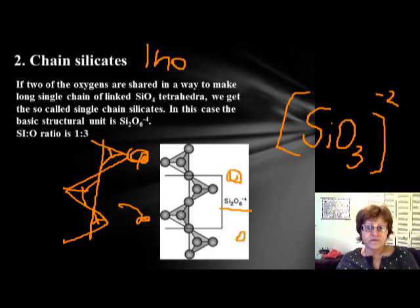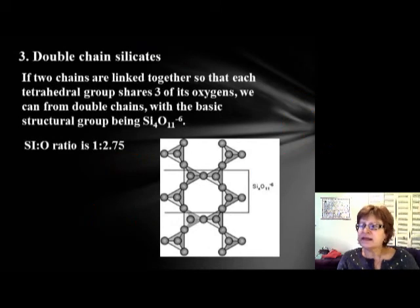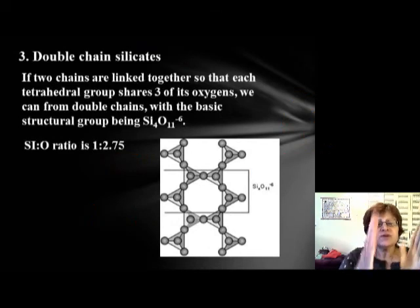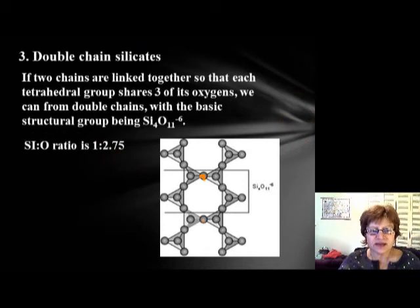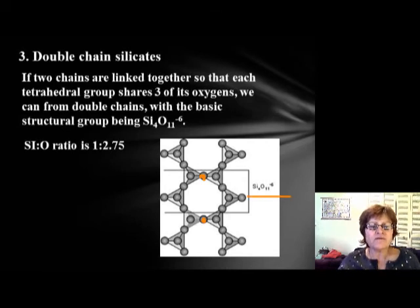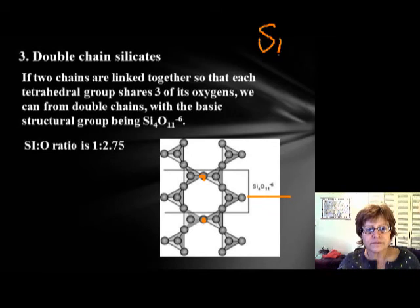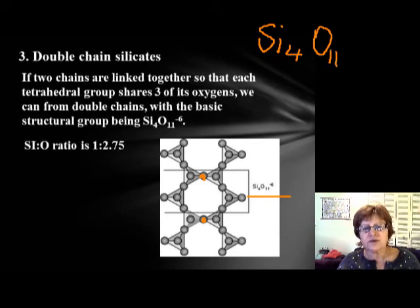The double chain silicate forms when two chains are connected by a shared oxygen atom between tetrahedrons. The formula is Si₄O₁₁, and since 11 oxygens × −2 = −22 and silicon contributes +16, it carries a −6 charge, to be fulfilled by cations.